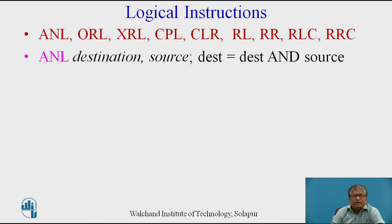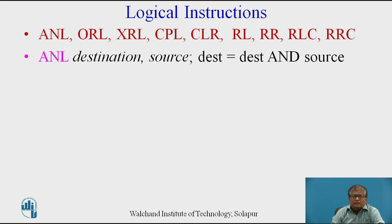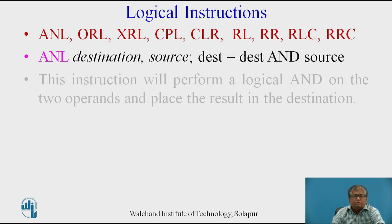First we will see the ANL instruction. The format for the ANL instruction is: ANL destination, source. The instruction format is the same for all instructions — opcode, then destination, then source. ANL instruction is provided to perform the AND operation. The logical AND operation takes place between the value in the destination and source, and the result is stored in the destination. For all these logical operations, the destination must be register A in the 8051 microcontroller.